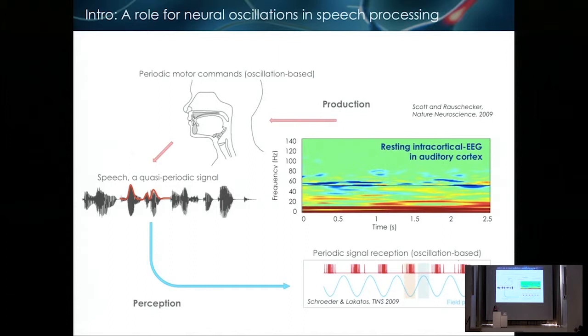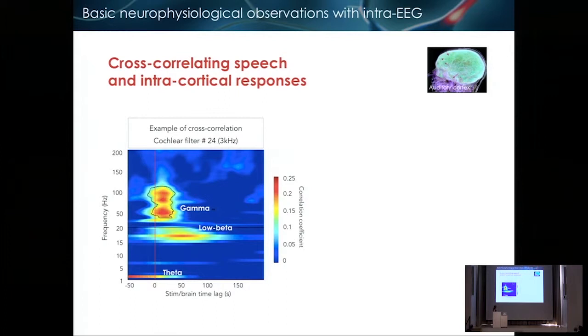And because the brain also has some periodic type of activity, the idea we worked on for the last 10 years now is this potential specific interaction that can happen between the rhythmicity of speech and the rhythmicity of the brain signals. When you look into the human brain in the auditory cortex with intracortical EEG at rest, you can see that there is some structure in the activity.